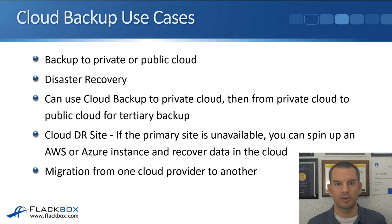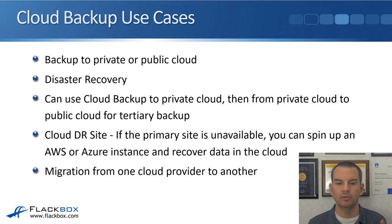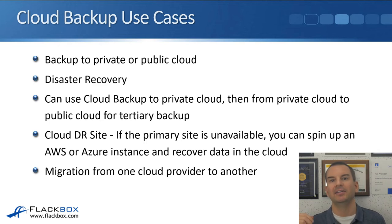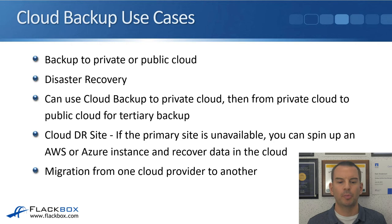Other use cases include a cloud DR site — your disaster recovery site can be your own off-site location or you can do disaster recovery in the cloud. If you lose your primary data center due to a flood or similar event, you can spin up an AWS or Azure instance of Cloud Backup, and with your backups already in the cloud, you can also spin up actual compute and get back working again. Cloud Backup also supports migration from one cloud provider to another.